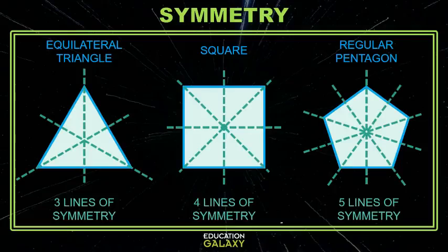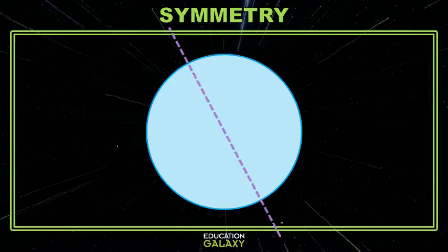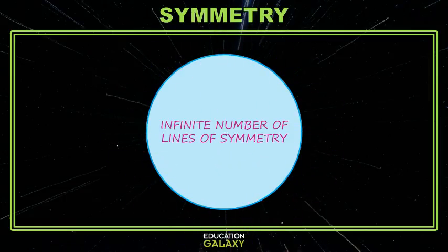So some of you might be asking, what about a circle? Good question. This circle, no matter what line you put through the center, is a line of symmetry. So, the circle has an infinite number of lines of symmetry.